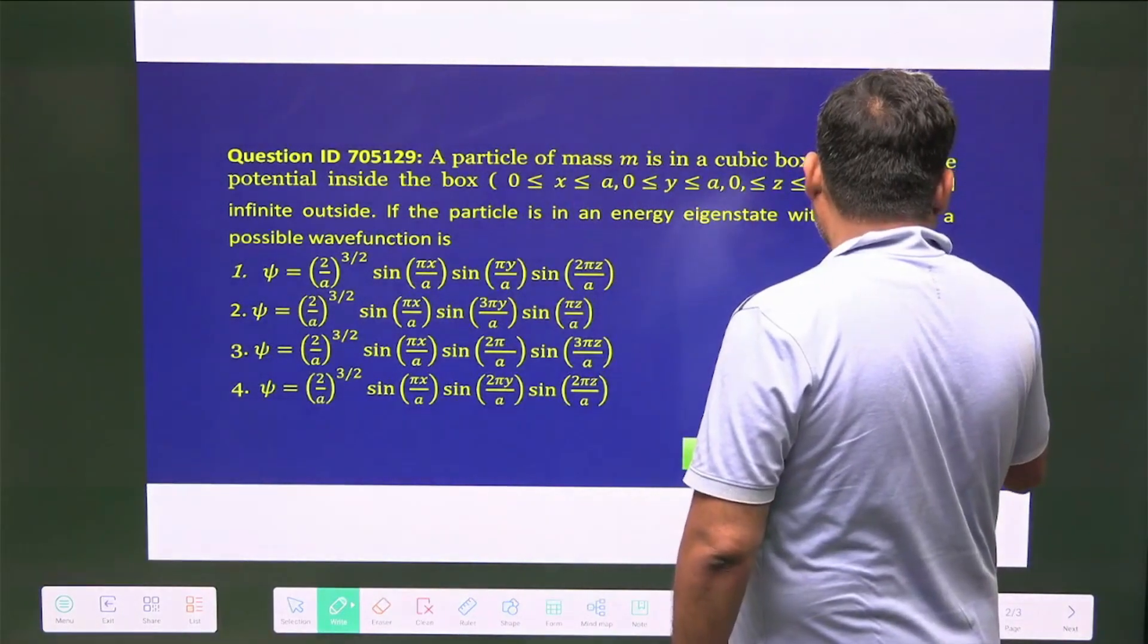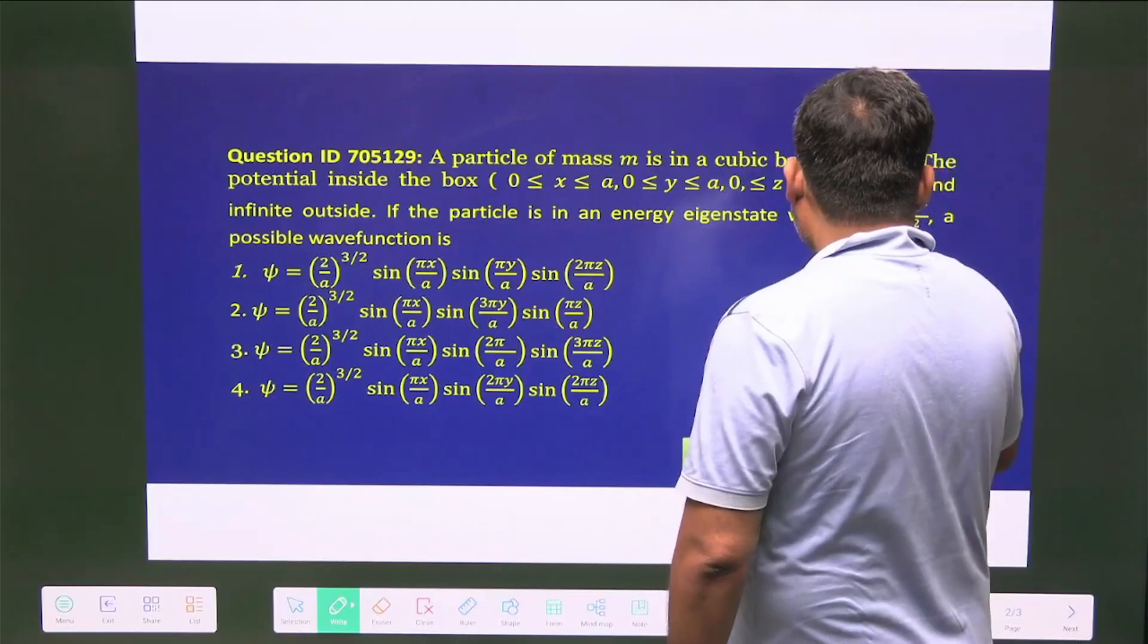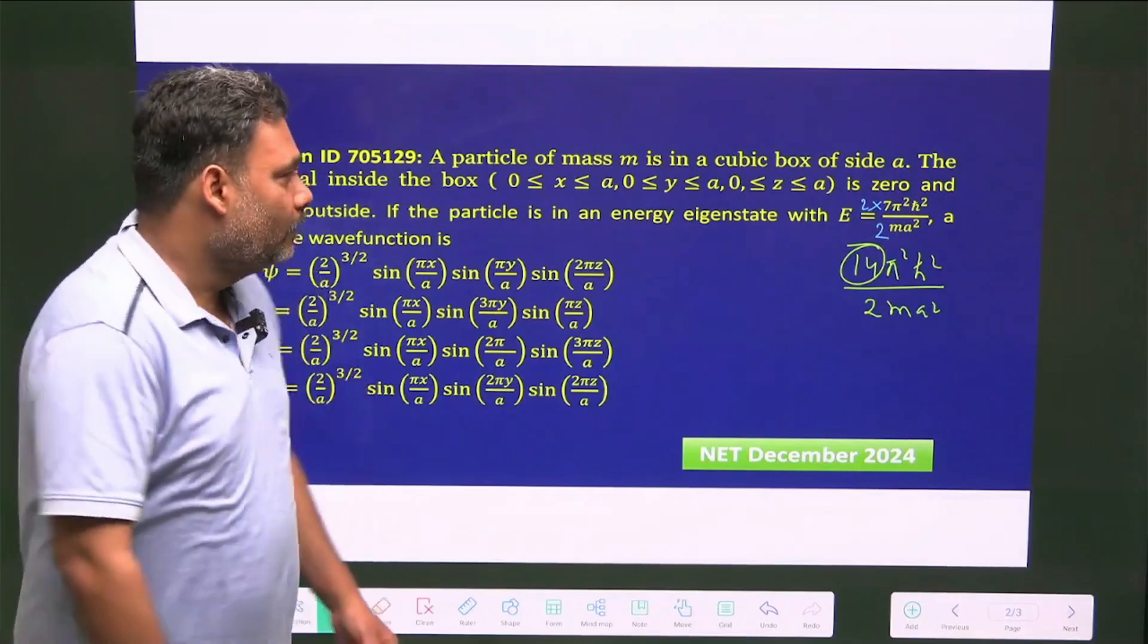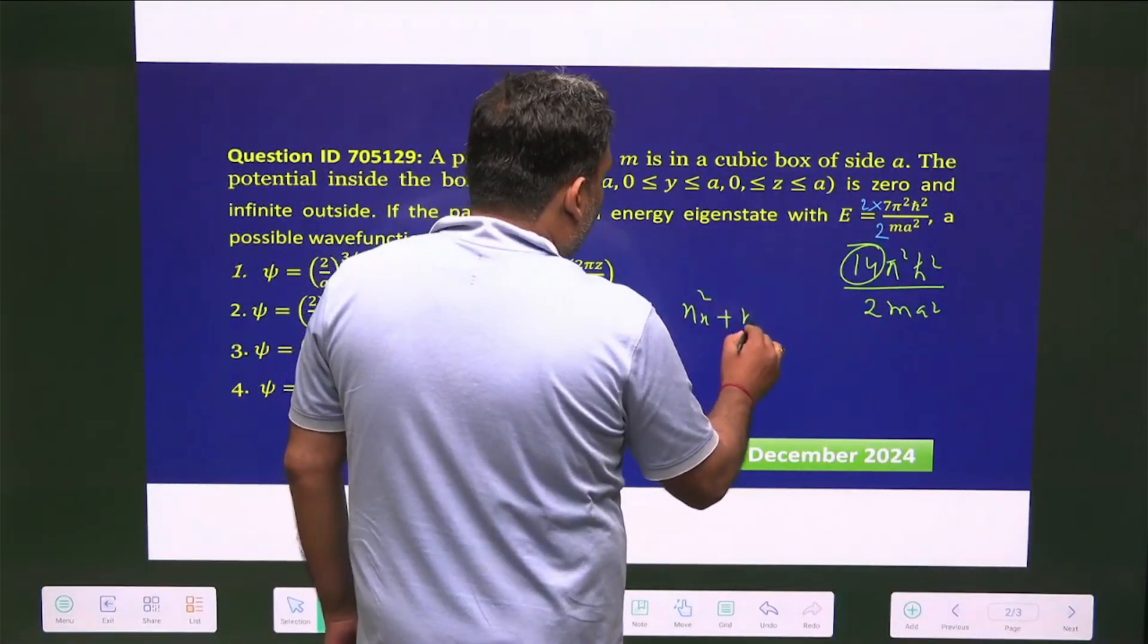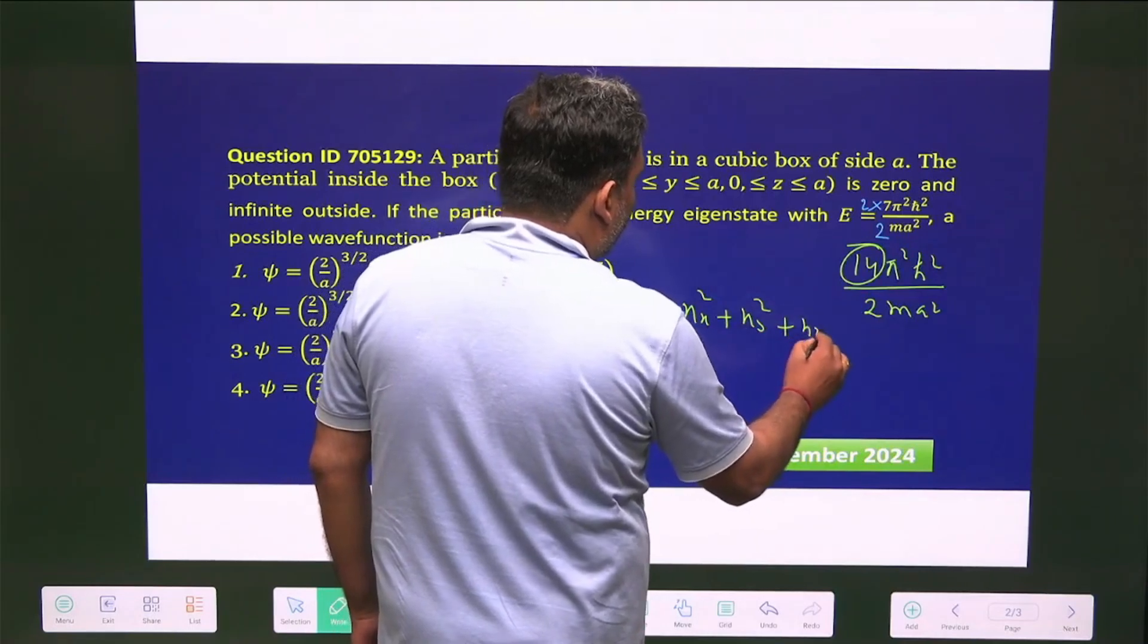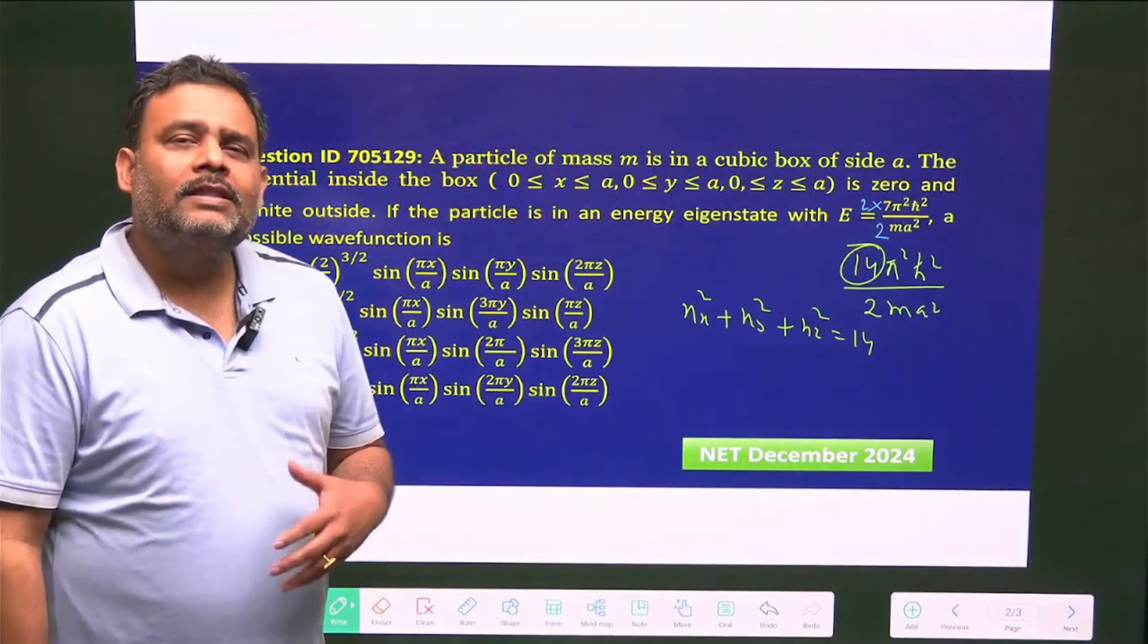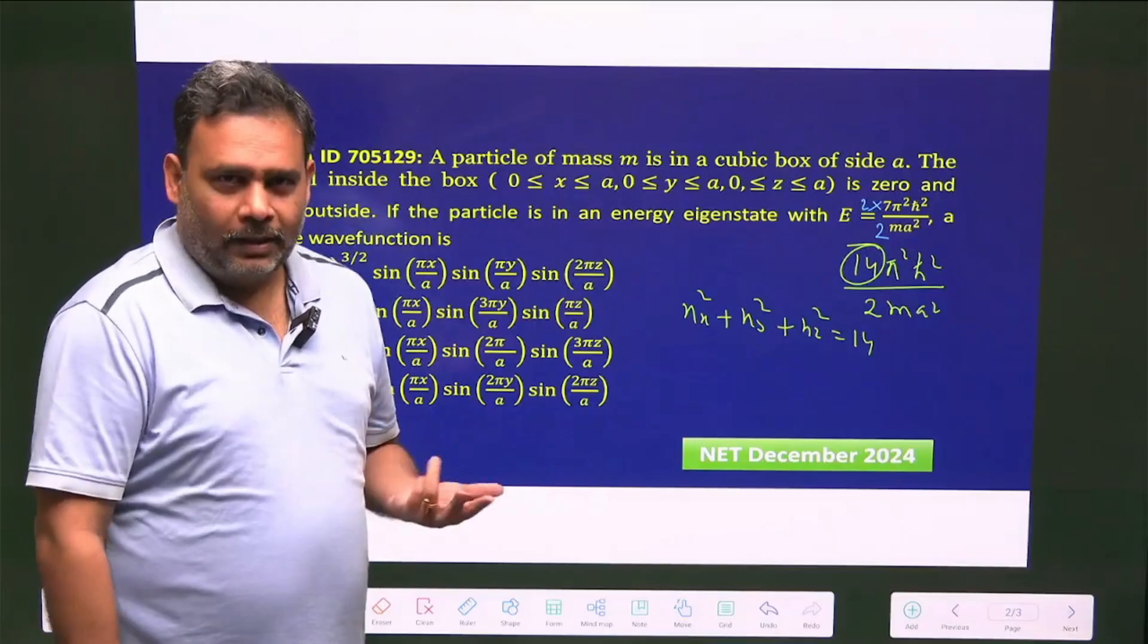π²ℏ²/2ma². So the particle is confined into a three-dimensional box. What will happen? You have nx² + ny² + nz² must be equal to 14, and then you have six sets of nx, ny, and nz which have one, two, three.